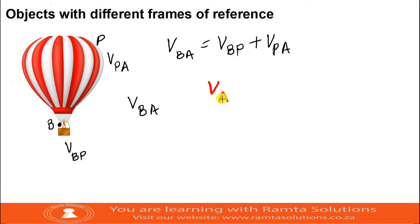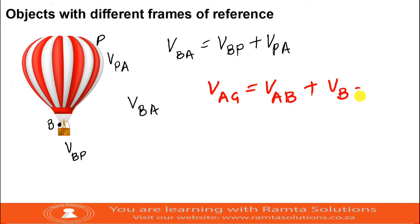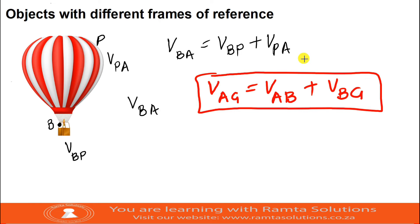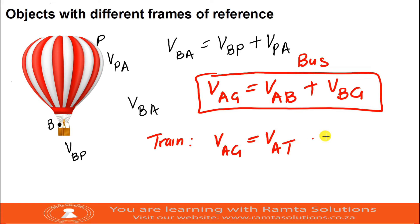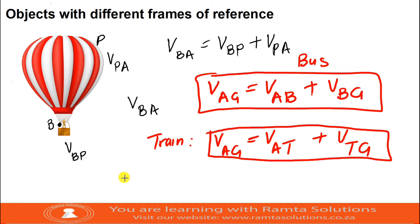Generally, the velocity of object A relative to the ground equals the velocity of object A relative to the bus, plus the velocity of the bus relative to the ground. Similarly for a train: velocity of object A relative to the ground equals velocity of A relative to the train, plus velocity of the train relative to the ground.